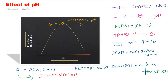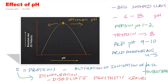Sometimes extreme pH also dissociates prosthetic groups from the apoenzyme. So, in summary, every enzyme has its own optimum pH where activity is maximum. On either side, the rate decreases due to alterations in the ionization state of active site residues or the substrate. At extreme pH, denaturation may occur, and there is also the possibility of dissociation of prosthetic groups, cofactors, coenzymes, or metal ions from the apoenzyme.